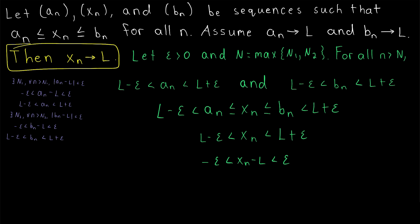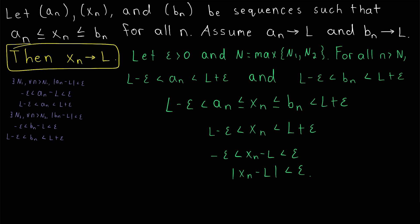Let's subtract the limit L through this inequality. That gives us that x_n minus L is between negative epsilon and positive epsilon, and we know that's equivalent to saying that the absolute value of x_n minus L is less than epsilon. And that is a pretty slick proof.